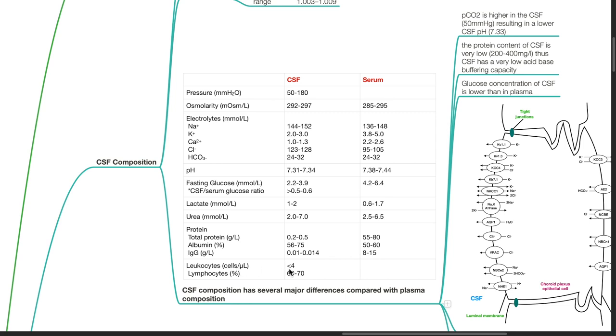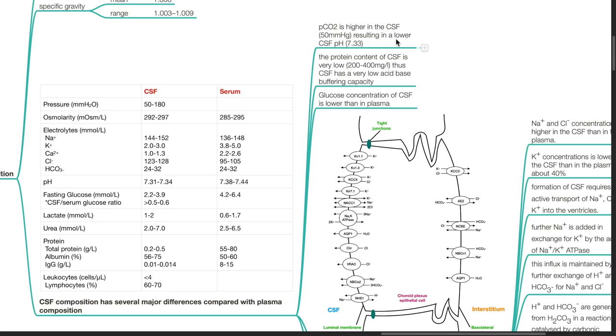CSF leukocyte is less than 4 cells per microliter, and lymphocyte is 60 to 70%. PCO2 is higher in the CSF at 50 mmHg, resulting in a lower CSF pH of 7.33.